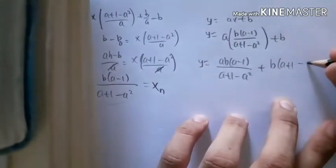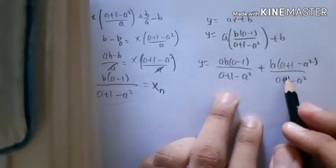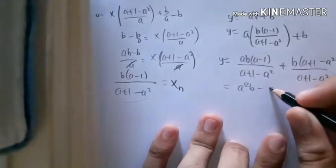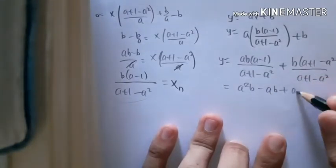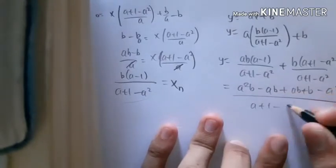Should be no bracket there, minus a² over (a+1-a²). You see, I'm just rationalizing the denominator. We can calculate it: (a²b - ab + ab + b - a²b)/(a+1-a²).